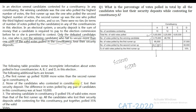None of the candidates who contested in constituency C lost their security deposit. Five people contested from there, and none of them will lose their security deposit, meaning everybody managed to get more than one-sixth of the votes. One-sixth of 6,30,000 is 1,05,000 votes, so everybody will get more than 1,05,000 votes. There is one more condition: the minimum difference between any two candidates is 10,000.